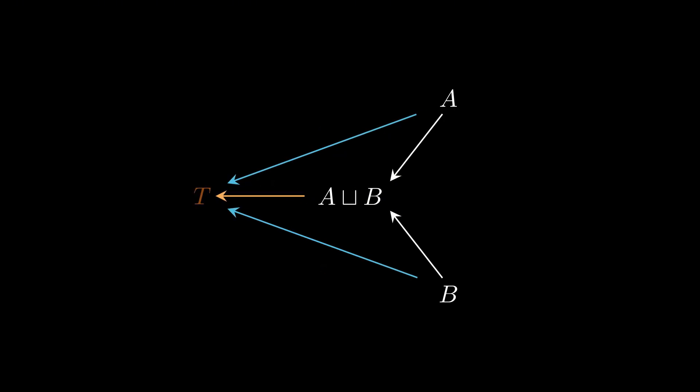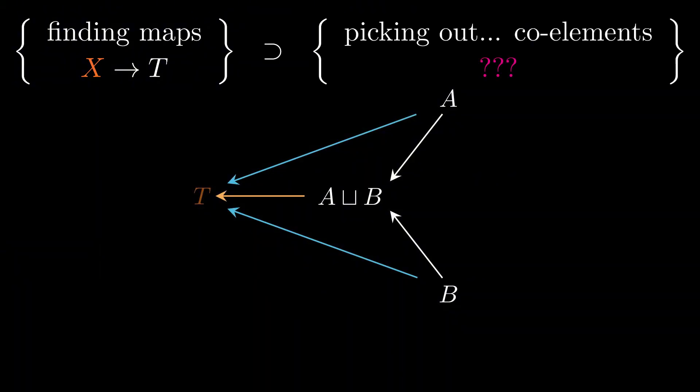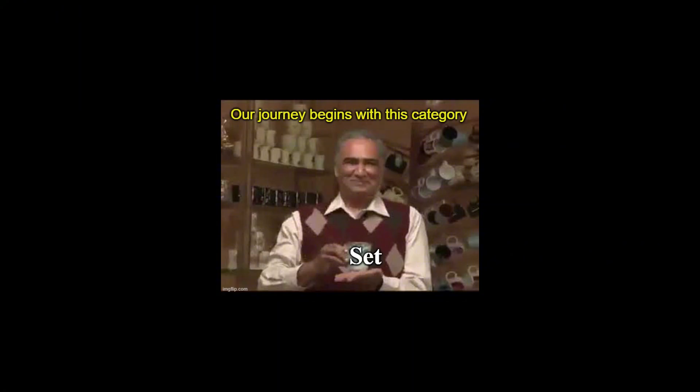After reversing arrows to get into the opposite category, we are now finding maps out of our object x. What does that correspond to? Coelements? What would that even mean? Since the birthplace of elements is the category of sets, it's natural to look there first to get an understanding of coelements. In this case, we don't need to guess. Coelements of sets are just elements of objects of the opposite of set.